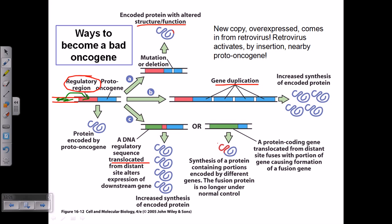Another thing that can also happen is the synthesis of a protein containing portions encoded by different genes. This type of malfunctioning protein can lead to various deadly effects — it could have a positive or negative effect toward producing cancer. So these are the different ways: one is deletion, second is duplication, and third is translocation, which can lead to change in our gene sequence. This change could occur in the proto-oncogene itself or in the regulatory sequence, and if it affects the growth regulatory genes, apoptotic genes, or tumor suppressor genes, it will change the course of the normal cell into a cancer cell.